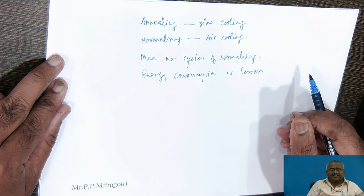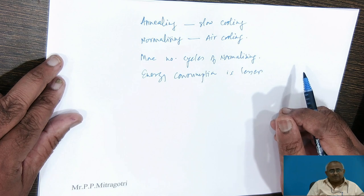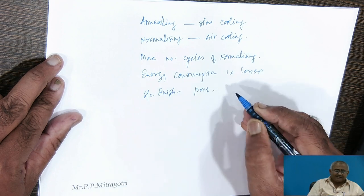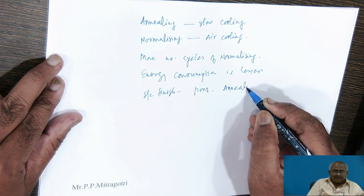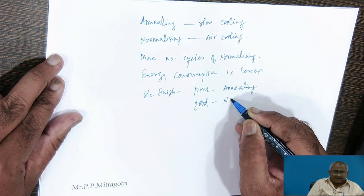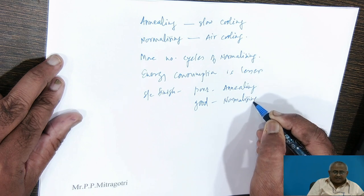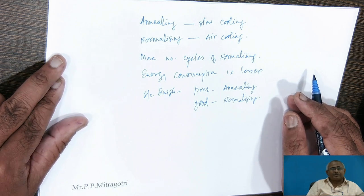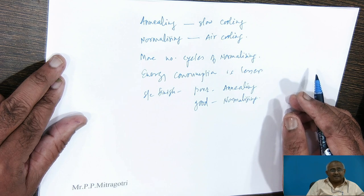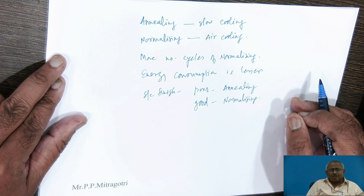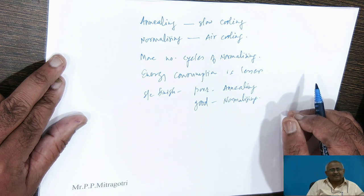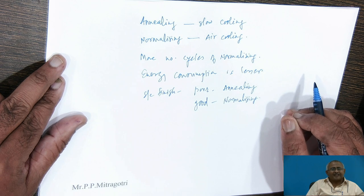Surface finish of the component after annealing is poor while surface finish is good after normalizing because of cooling in air. The most important aspect of comparison is grain refining. Annealing carries out refinement to a great extent. Normalizing also carries out grain refinement, but the grain refinement observed after normalizing is not to the same extent as that observed after annealing.